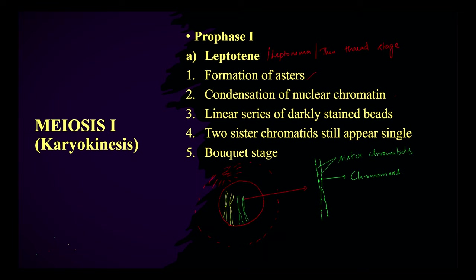These chromatids still appear single — we cannot see the duplicated chromatids because of the nucleoprotein present between the sister chromatids.